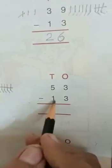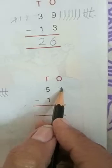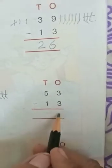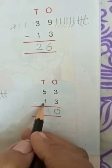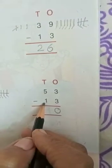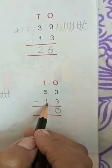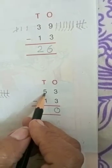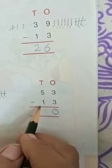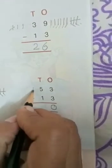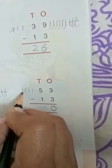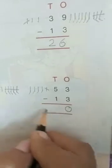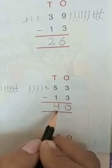Now next: 53 minus 13. You have to take away three ones from three ones, so the answer will be zero. Now five minus one — there is a shortcut method. The answer will be four: one, two, three, four, five — we have to take away one. How many numbers are left? One, two, three, four. Five minus one is four.